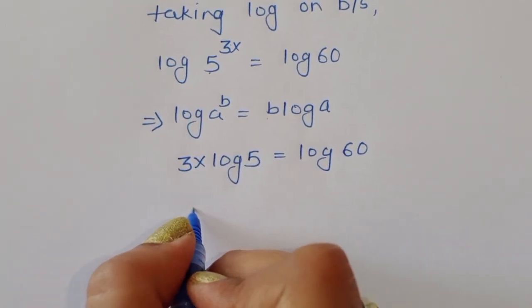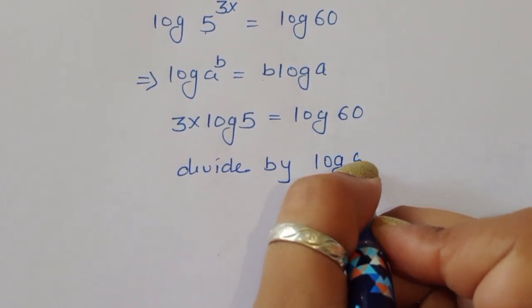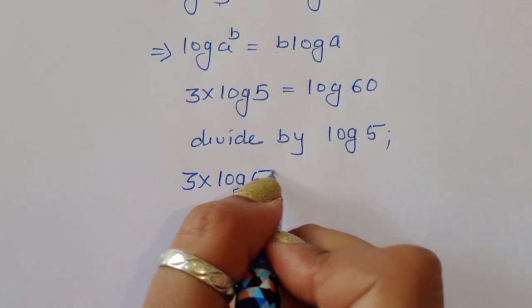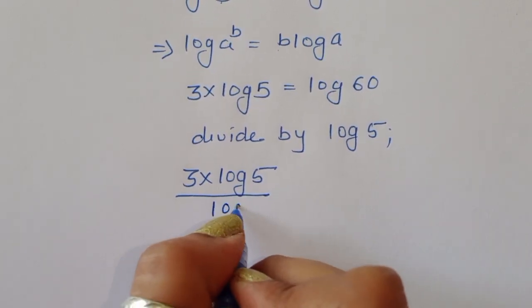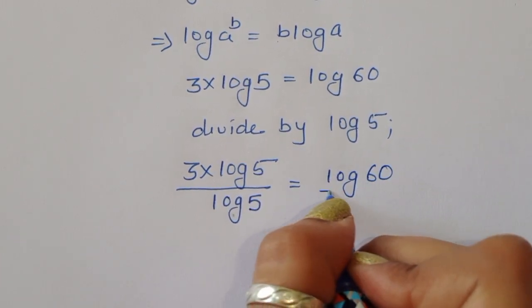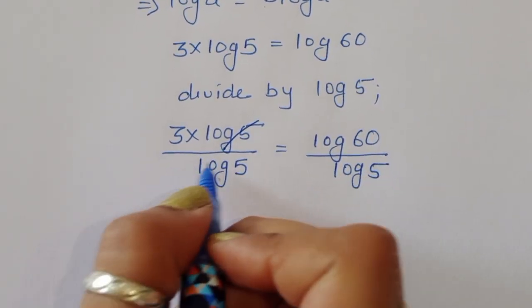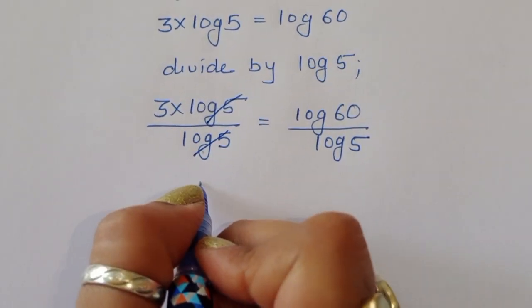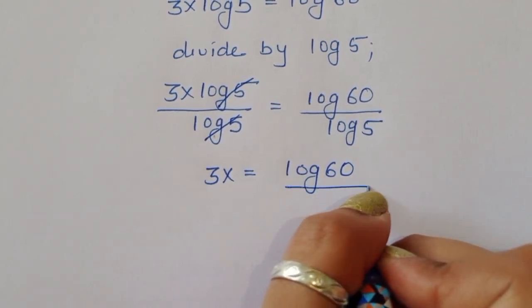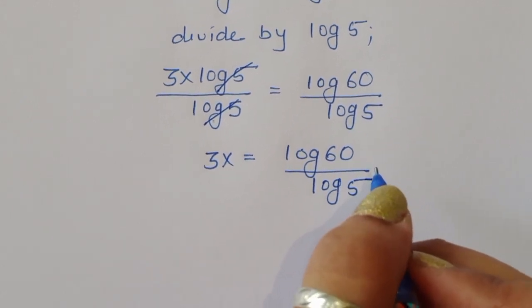Now we have to cancel log 5, so we divide both sides by log 5. So 3x·log(5) divided by log(5) is equal to log(60) divided by log(5). The log(5) cancels, giving us 3x is equal to log(60) divided by log(5).